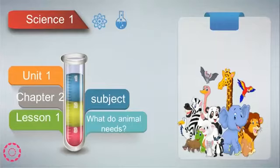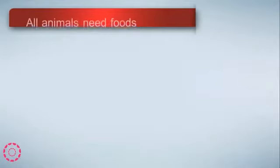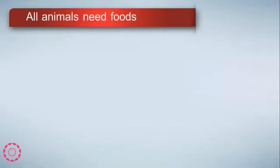Hello dear students, how are you? We have Science 1, Unit 1, Chapter 2, Lesson 1. Our subject is: what do animals need? We have so many kinds of animals, and all animals need water and air to live on.